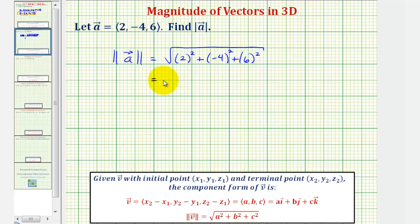So this would give us the square root of 4 plus 16 plus 36. This is equal to the square root of 20 plus 36, or 56.